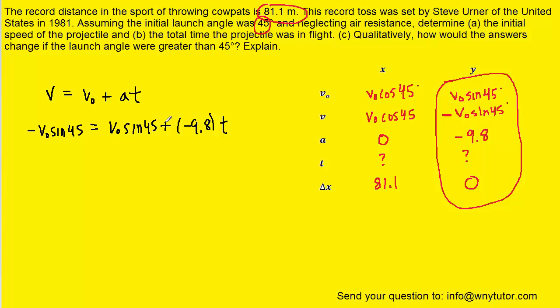A little algebra: we're adding a negative quantity, so that becomes subtraction. Our goal is to solve for time t. Subtract V0 sin 45 to the other side to get negative 2 V0 sin 45 equals negative 9.8 times t. Then divide both sides by negative 9.8. We have a negative divided by a negative, which makes it positive overall.